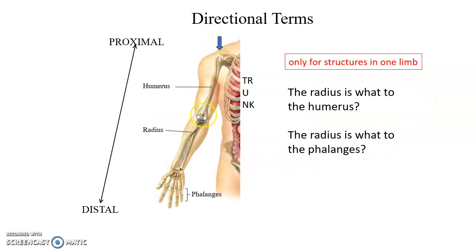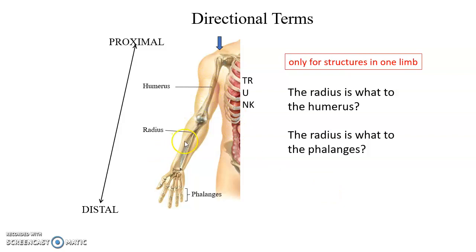When talking about a single limb of the body — an arm or a leg — you use the terms proximal and distal instead of superior and inferior. These terms refer to where the limb attaches to the trunk of the body. Proximal is closer to where it attaches to the trunk; distal is further away. The humerus is proximal to the radius, and the radius is proximal to the phalanges.